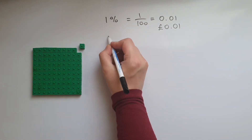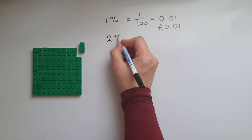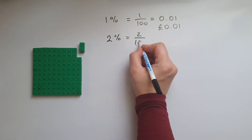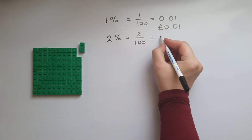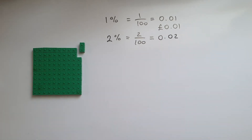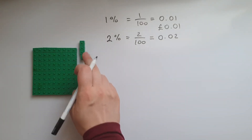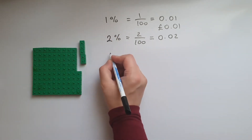Two percent is double the one percent, and that is two out of 100, which we also write as 0.02. Three percent is going to be three times that. Four percent is four times that, and five percent is five times the one percent.